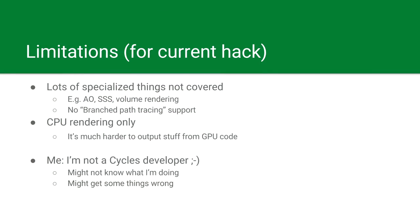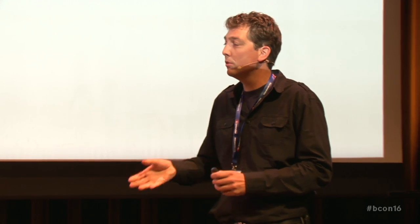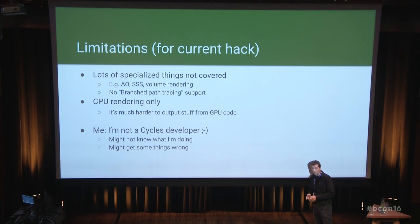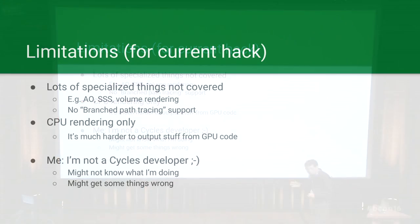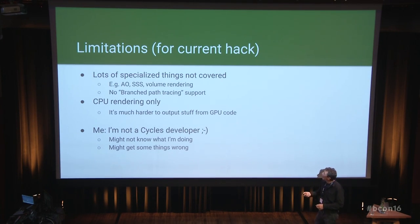The current hack is pretty limited — it's a first start. A lot of specialized things are not captured right now: ambient occlusion, subsurface shading, and similar things are not being saved to disk. There's also no support for the branched path tracing within Cycles. It's CPU rendering only — it's quite hard to get output from the GPU. And perhaps the biggest limitation is me, because I'm not a Cycles developer. I only do this based on what I know from one or two path tracers I've written myself, so I might be doing some things wrong.